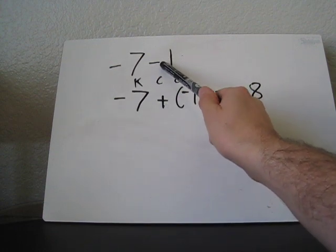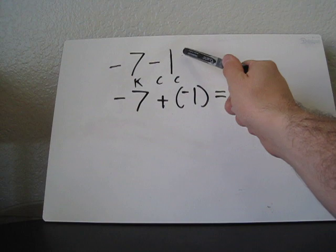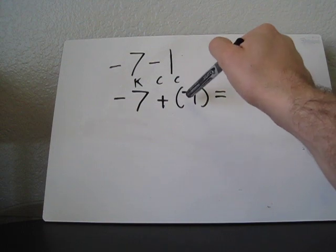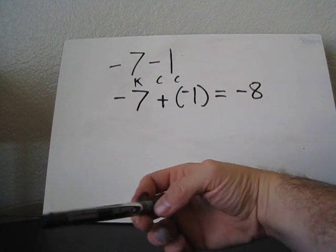So the negative 7 stays a negative 7. The subtract turns into a plus. And the 1 turns into a negative 1.